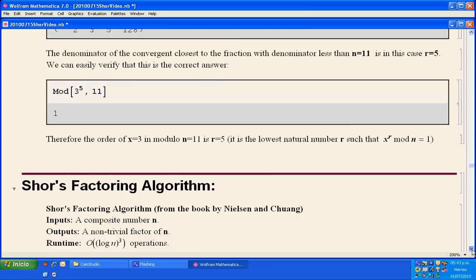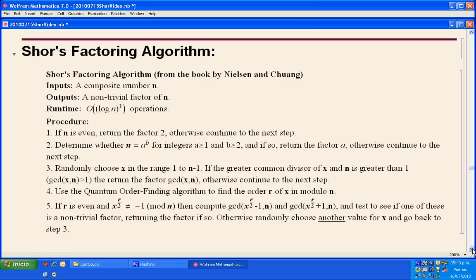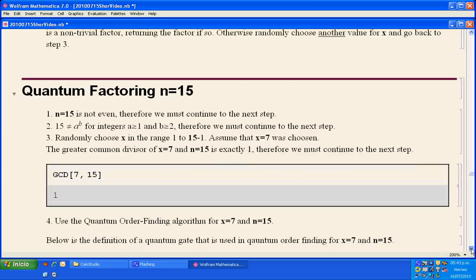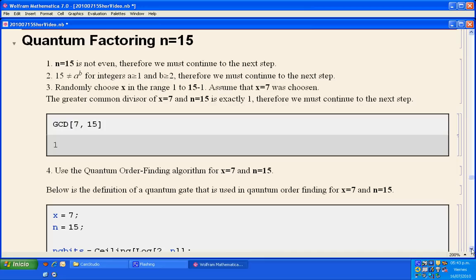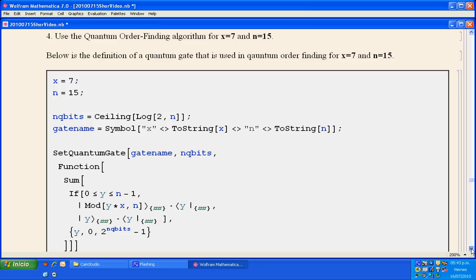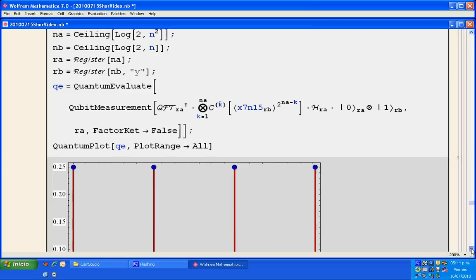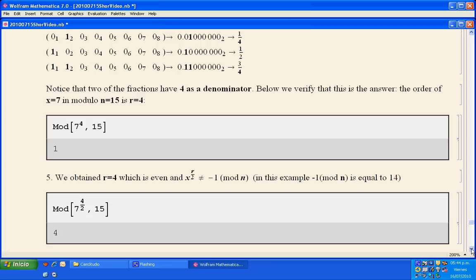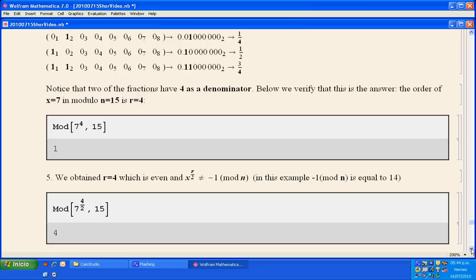Shor's factoring algorithm uses actually the quantum order finding, quantum phase estimation. Again I'm going to show it very fast here. We're going to factor n equal to 15, assuming that we get 7 as a random number that we're going to use. This is the circuit, well, the gate, the circuit, the result of the measurement, the post-processing of the measurement. In this case it's very simple, and with certain probability we get, finally, the factors of 15, which are 3 and 5.